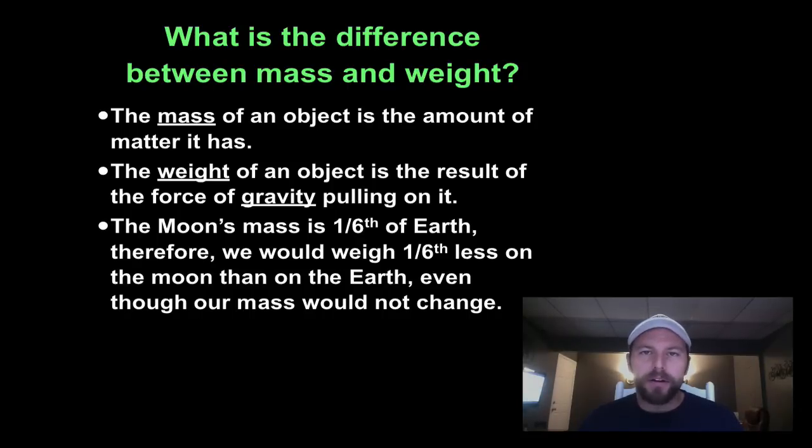Mass is the amount of matter in an object. Matter, it could be compounds, or anything made up of your simplest elements. It would be gold, oxygen, carbon, whatever the case may be. Those atoms are what makes up that matter.